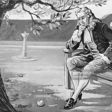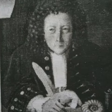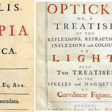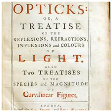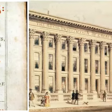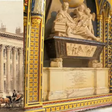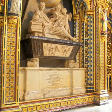Among all scientific papers and books published by him, Principia, published in 1687, and Optics, published in 1704, are the most famous. Newton was elected Fellow of the Royal Society and later became its president.